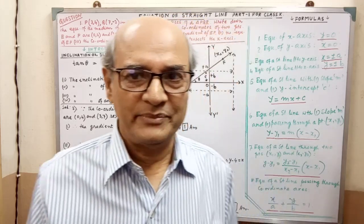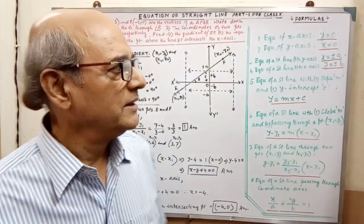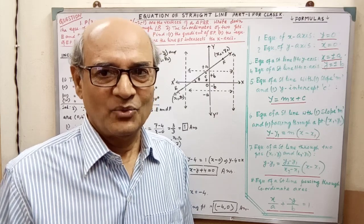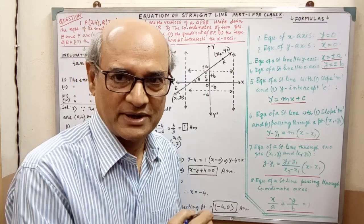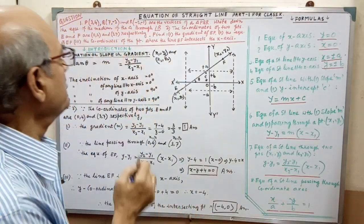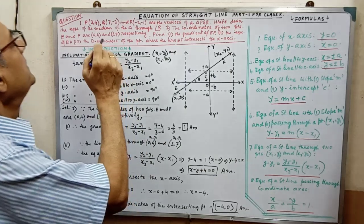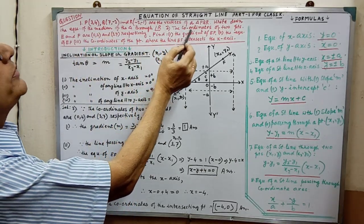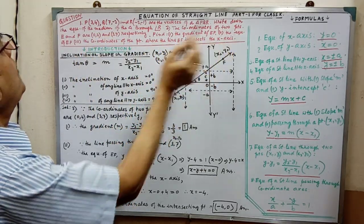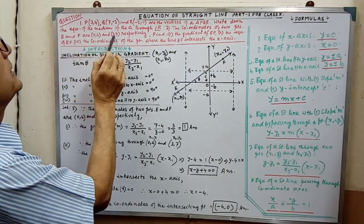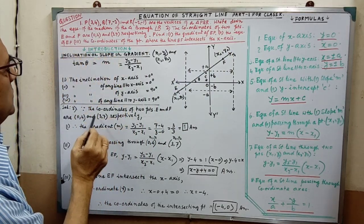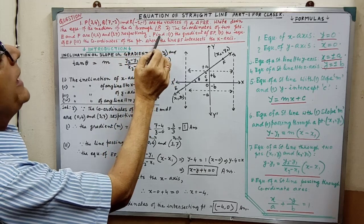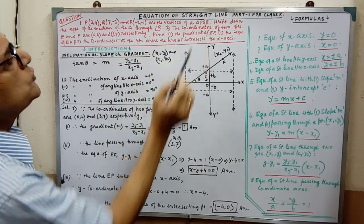Now, based on these formulas, the sums are given. There are two sums — one for homework and one solved here. The second sum: the coordinates of two points E and F are given. We have to find the gradient of EF.